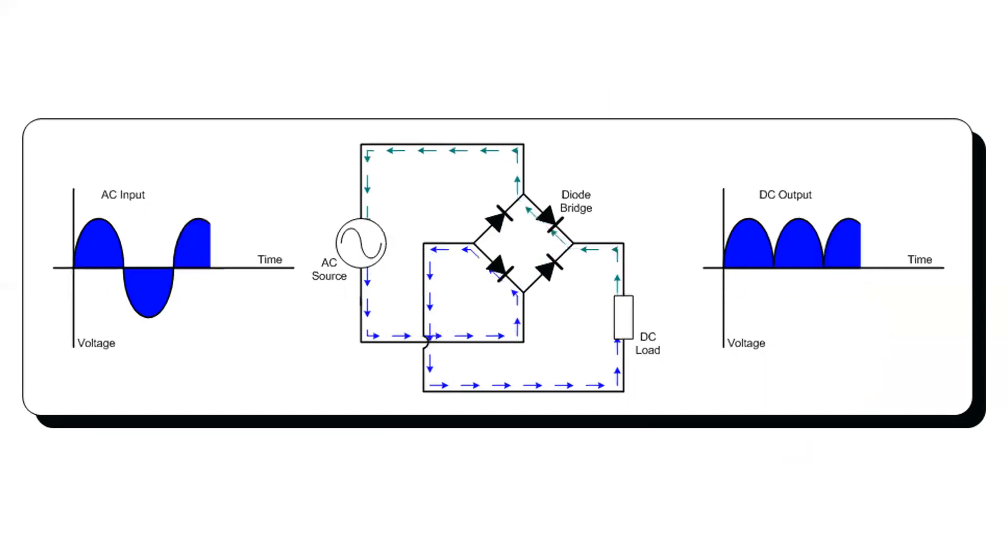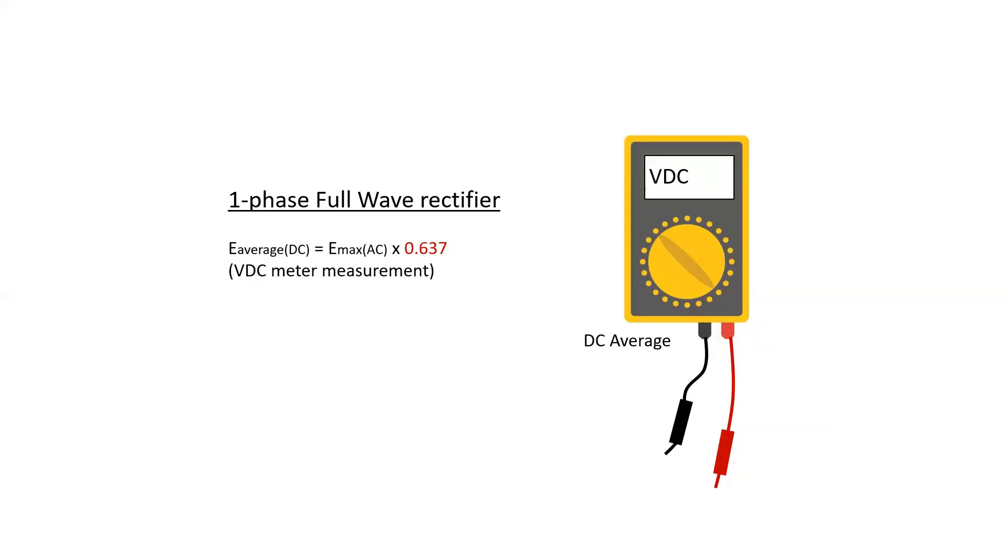Due to the lack of zero volts being applied across the load, the DC voltage that we would expect to measure is much higher. For single-phase full-wave rectifiers, the E max value of the AC sine wave times 0.637 would equal the volt DC meter measurement value.